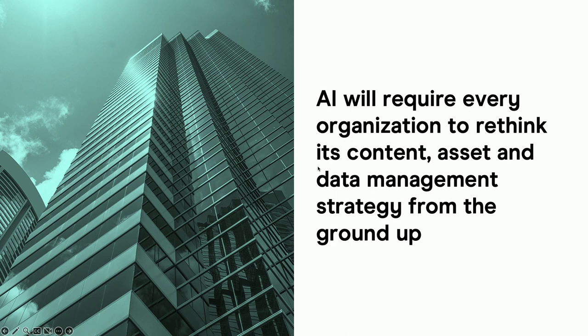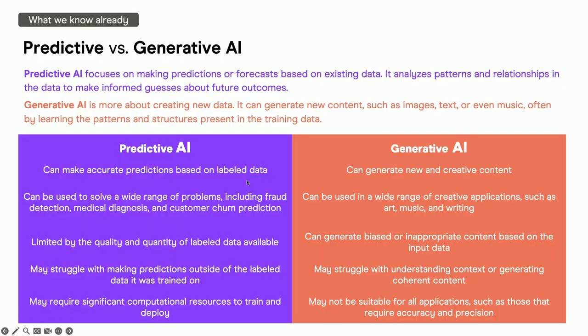I'm going to start with the statement that AI is going to require every organization to think about their content, asset, and data management strategy from the ground up. That's because data is the foundation for all of AI. And when we're talking about creative works, it is going to be especially consequential because a lot of the work that we create is based on the data or the art of folks who can claim copyright protections over that.